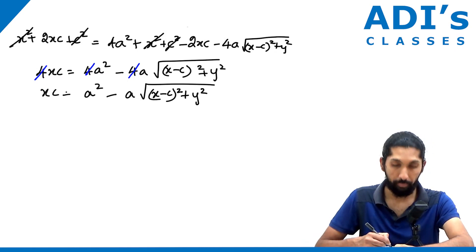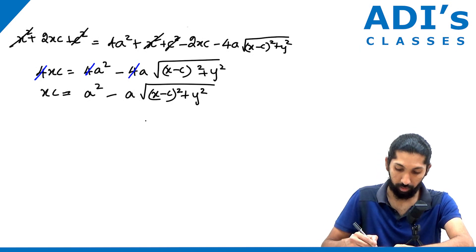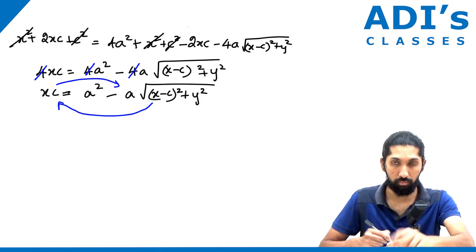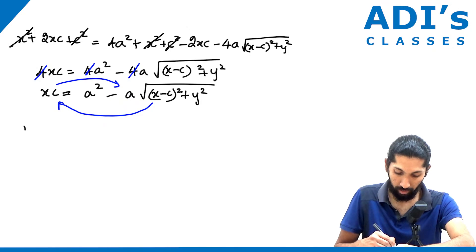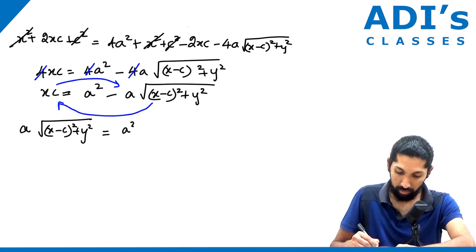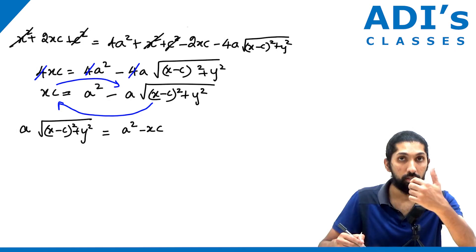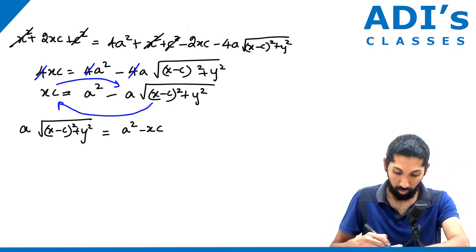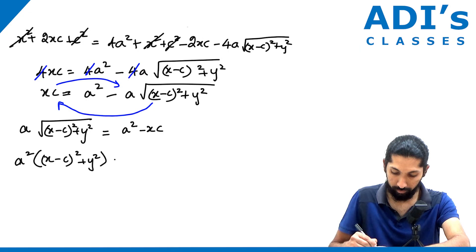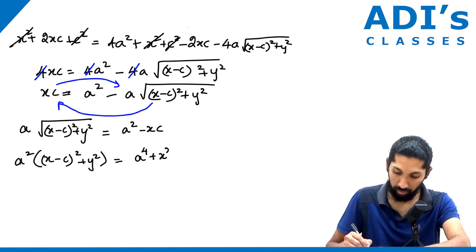Take the root part and transpose: a·√((x−c)² + y²) = a² − xc. Square both sides again: a²·[(x−c)² + y²] = a⁴ + x²c² − 2a²xc.